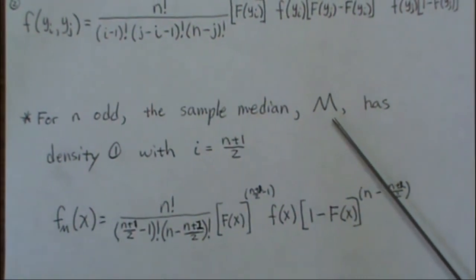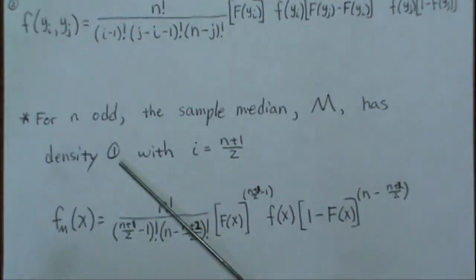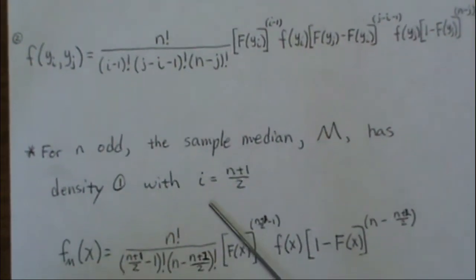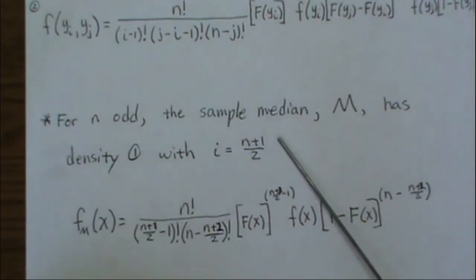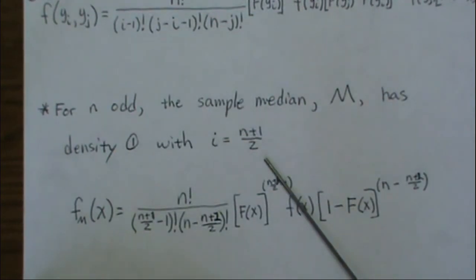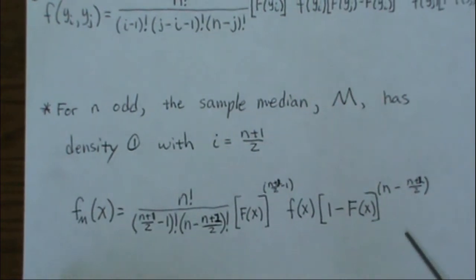So the density of M is just the first density we discussed. It's the ith order statistic with i equal to the middle value. So you plug in n plus 1 over 2 to the equation 1 above, and you get this.